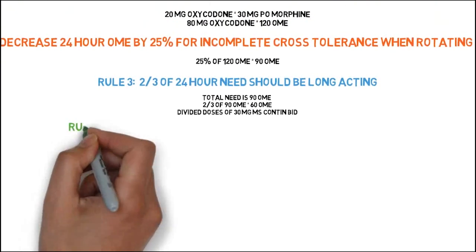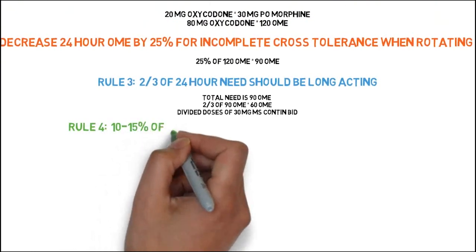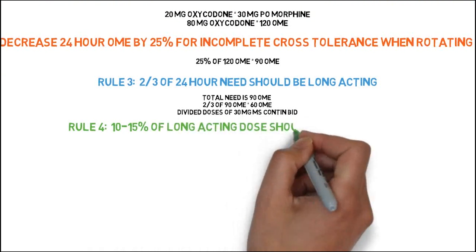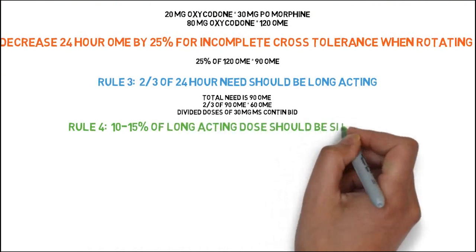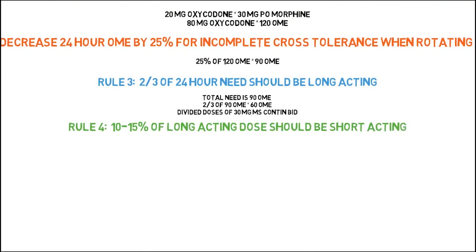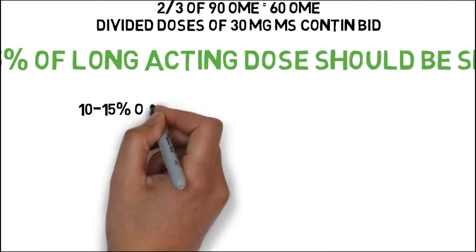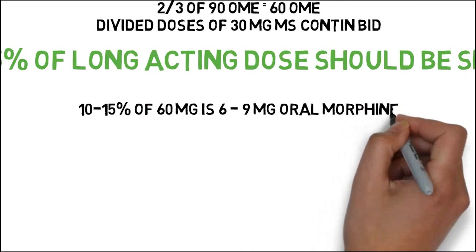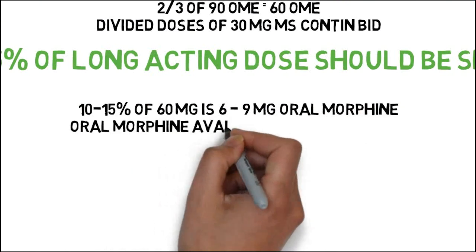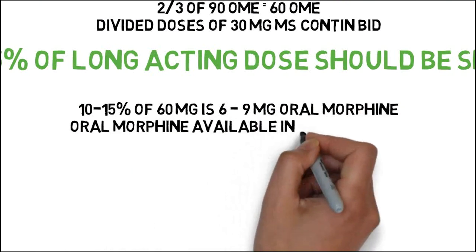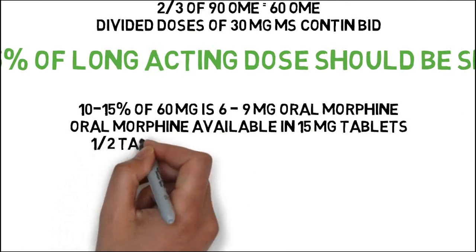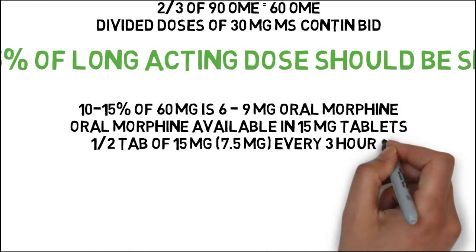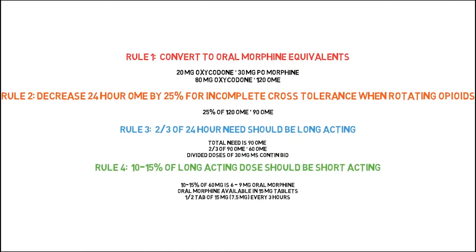For rule four, the short-acting dose is 10–15% of the total 24-hour long-acting dose. In this example, 10–15% of 60 mg equals 6–9 mg. As immediate-release morphine is available in 15 mg tablets, we prescribe one-half tablet of morphine — 7.5 mg per dose — every three hours as needed.